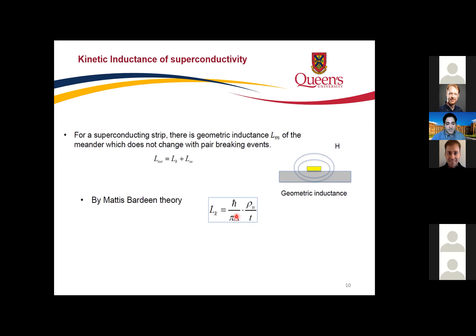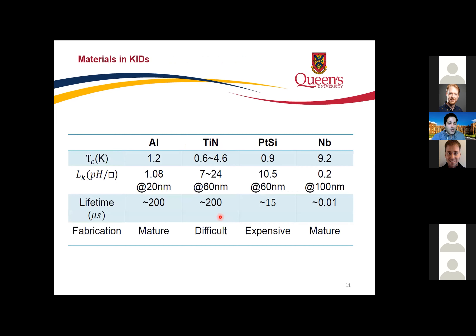Common thin film materials used for MKIDs include aluminum — usually for the millimeter range — but aluminum is not ideal for the optical range because of light reflection. Titanium nitride and palladium silicide are candidates for the optical range. More recently, tungsten silicide has also been investigated. Researchers are studying which material gives better resolution.